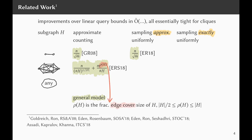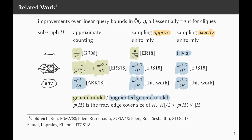For the time being, you should think of ρ(H), the fractional edge cover size of H, as a number between |H|/2 and |H|. For the augmented general model, sampling exactly uniformly from the set of edges is trivial because we have uniform edge queries. The approximate clique-counting algorithm for the general model can be modified to become an exactly uniform sampling algorithm for the augmented general model. Asadi, Kaprodov and Kanner show that approximately counting any arbitrary subgraph in the augmented general model requires only M^(ρ(H)) over (copies of H) queries. In this talk I will discuss that this is also the query complexity sufficient for exactly uniformly sampling subgraphs.